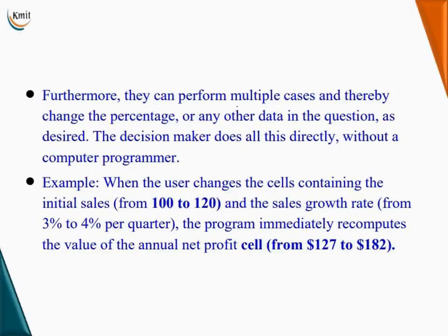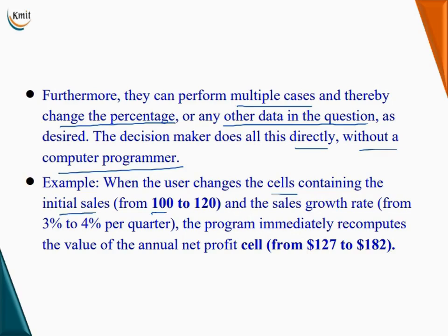Furthermore, managers can perform multiple cases and thereby change the percentage or any other data in the question as desired. The decision maker does all this directly without a computer programmer. For example, when a user changes a cell containing the initial sales from 100 to 120 and the sales growth from 3% to 4% per quarter, the program immediately recomputes the annual net profit, and it changes from $127 to $182.